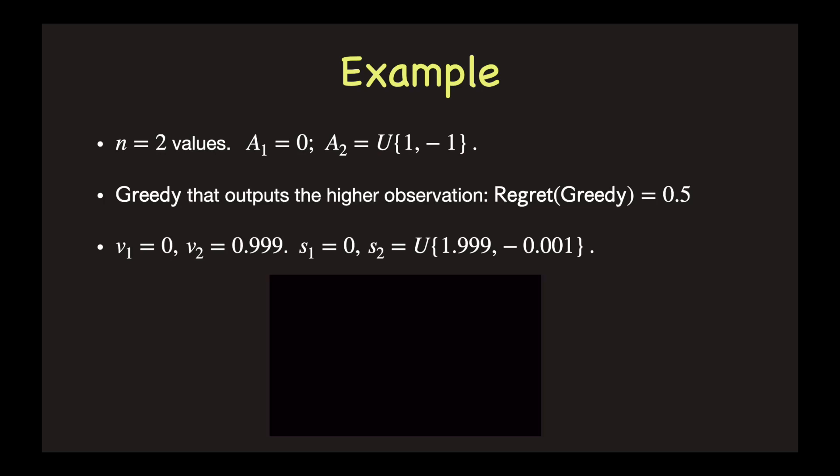It turns out that the regret of this greedy algorithm is 0.5. To see why this is the case, consider the following instance, where v1 is always 0, and v2 is very close to 1, so it's 0.999. Then, because the first value has no noise, we know the observation s1 is always equal to 0. And because the noise for the second value is either 1 or minus 1, we know the observation for the second value is either 1.999 or minus 0.001.